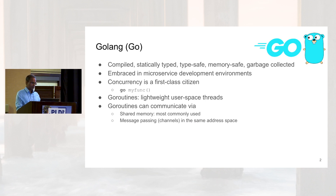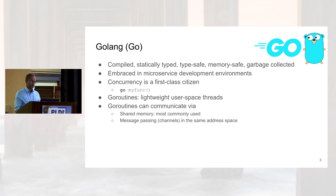Golang is a relatively modern programming language. It is compiled, statically typed, type-safe, memory-safe, and garbage-collected. It is embraced in microservice development environments. Concurrency is a first-class citizen in Go. You can prefix pretty much any function with the keyword Go, and the function will be launched to execute concurrently with the rest of the program.